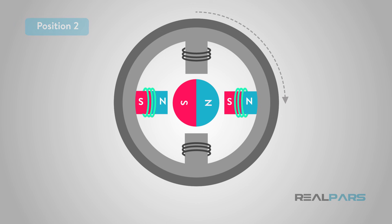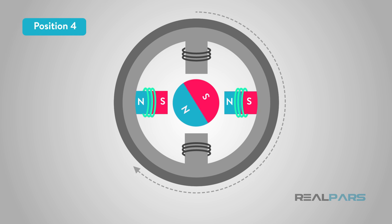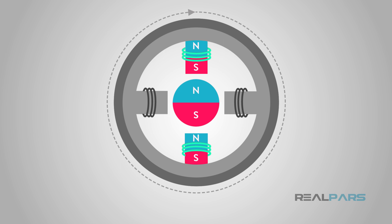Now, as we continue to deactivate and activate the electromagnet poles around the stator in positions 3 and 4, causing the rotor to realign with each new electromagnet pole, we enable the rotor to rotate 90 degrees clockwise each time. This eventually completes a full 360 degrees of rotation.